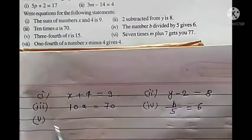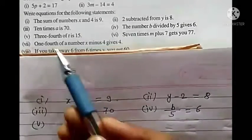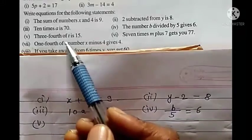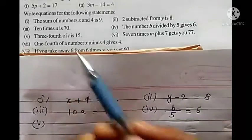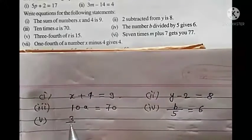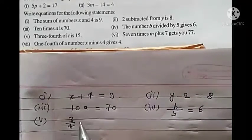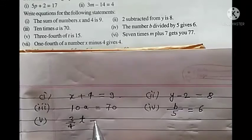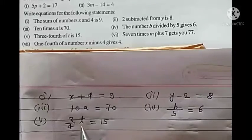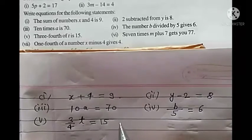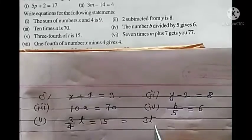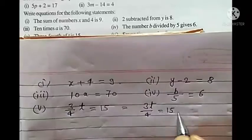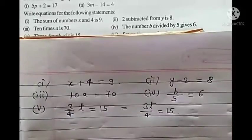Fifth: 3 fourth of t is 15. '3 fourth of t' means multiply, so 3 upon 4 times t. You can also write it as 3t upon 4 equals to 15.